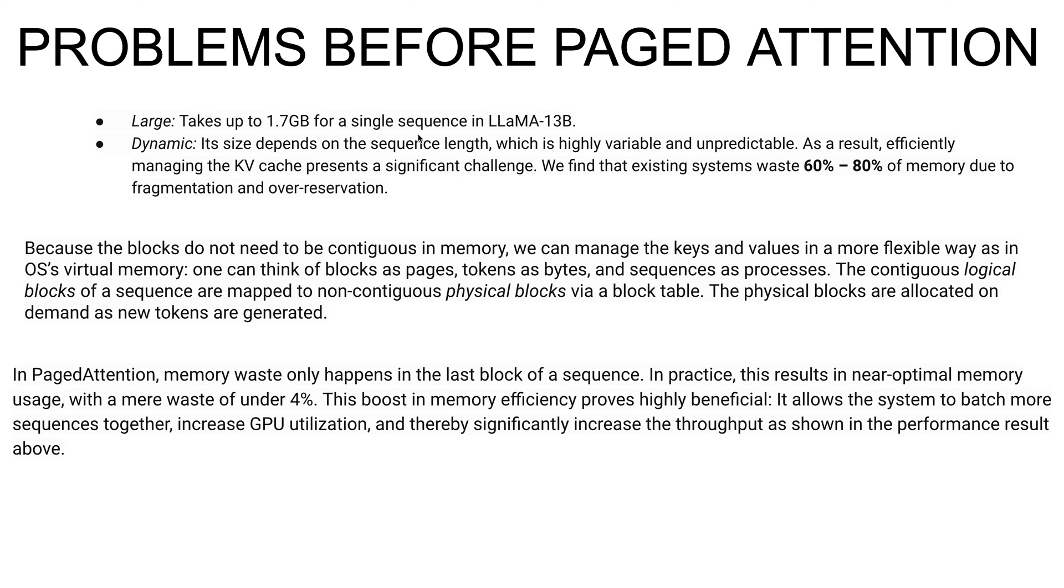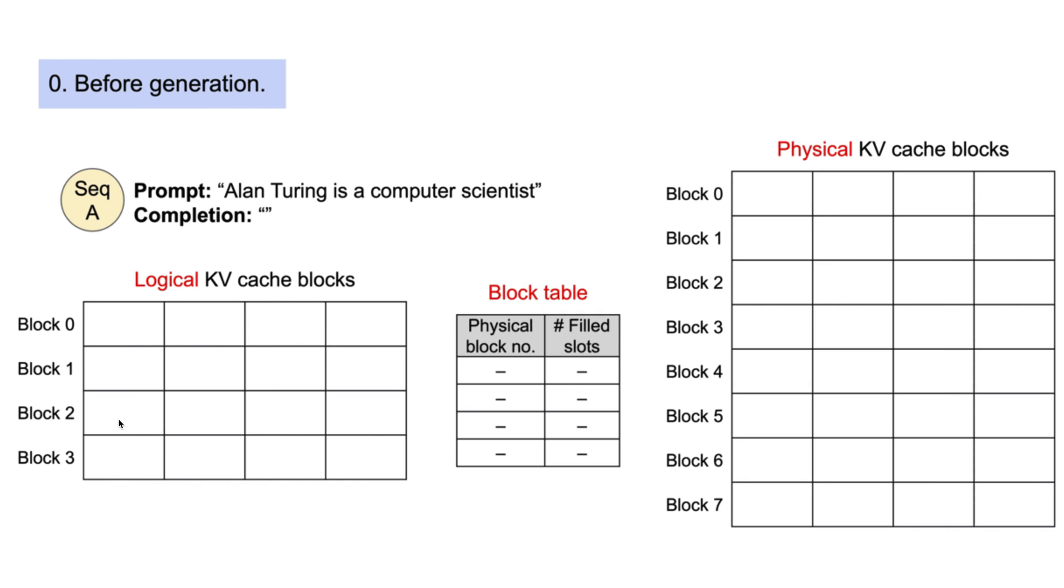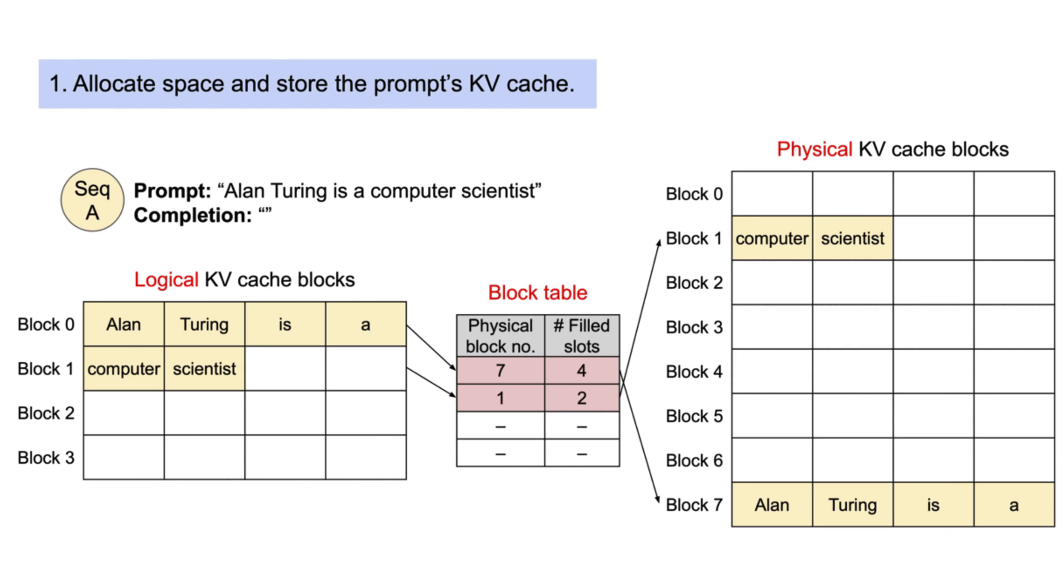What were the problems before? It was taking up 1.7GB for a single sequence in Llama 13 billion parameter model, and 60 to 80 percent of memory was getting wasted going to fragmentation. After using page attention, waste is coming down to only 4 percent. We're actually boosting our utilization of GPU memory.